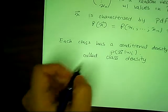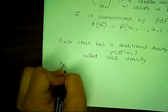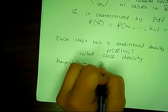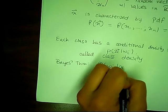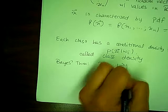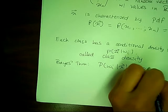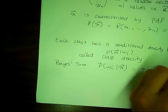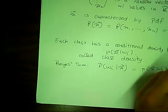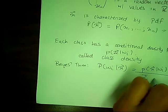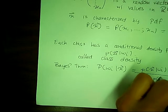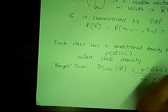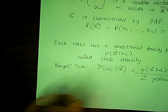We again recall Bayes' theorem, which is the probability of W_I given X over the summation of P of X given W_I times the prior of W_I.